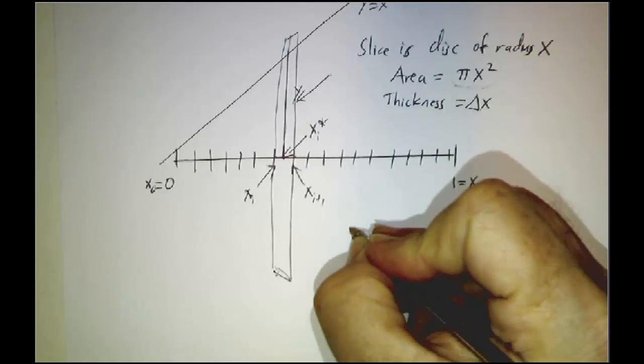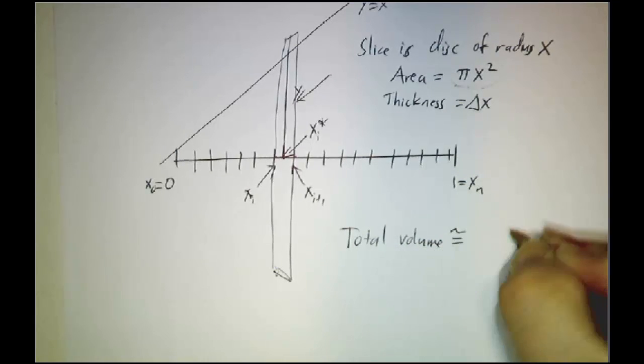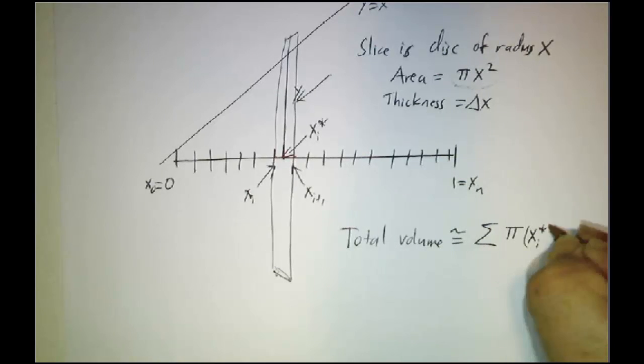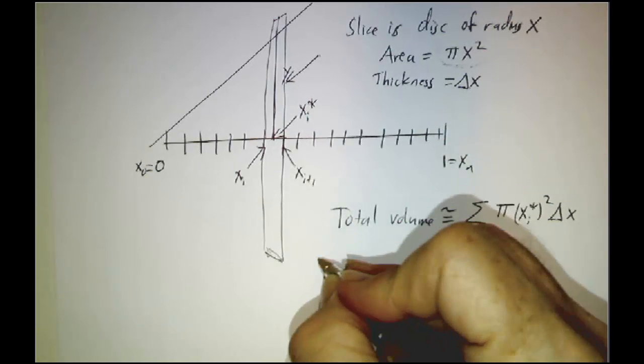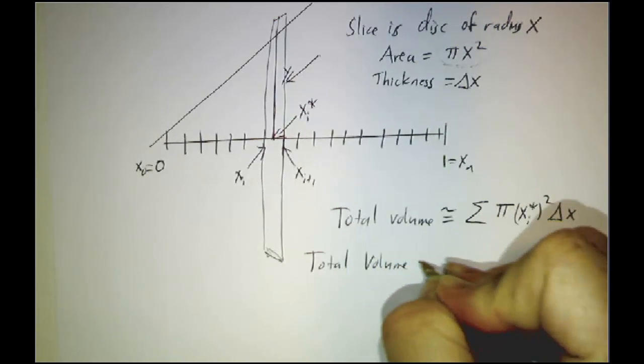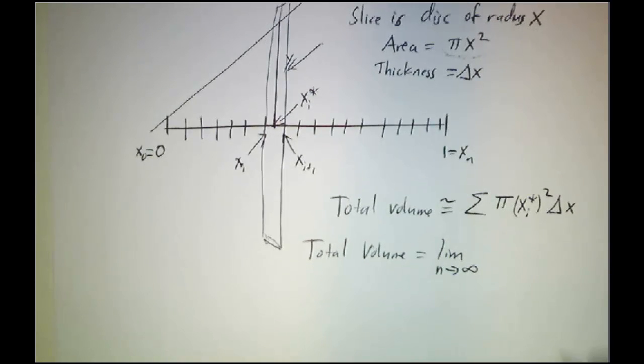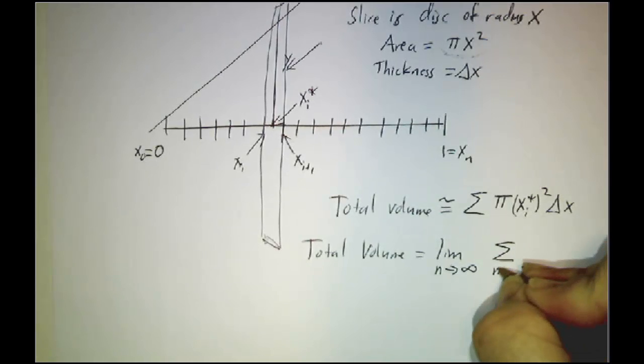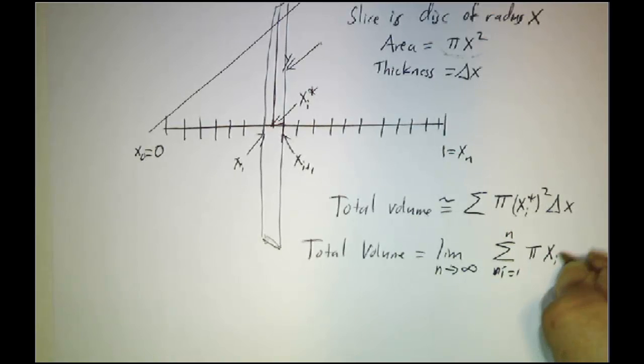And so what we've got is the total volume is approximately the sum of pi times xi star squared times delta x. And if we want to know the exact volume, we take a limit. We get the limit as you chop things up into more and more pieces of the sum as i goes from 1 to n of pi times xi star squared times delta x.